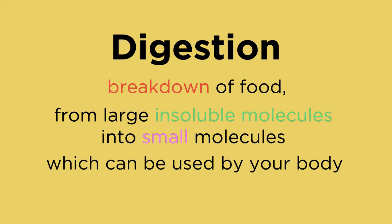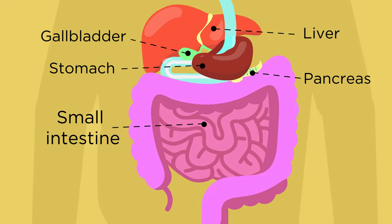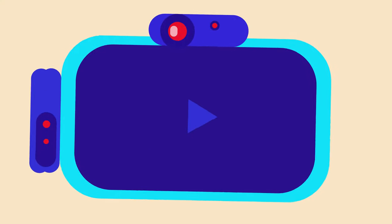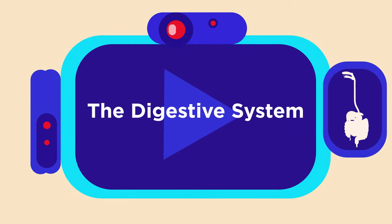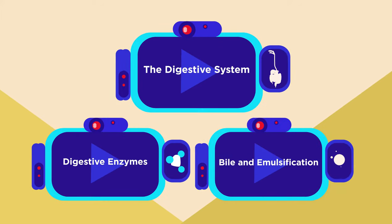For more information on the roles of these organs in the digestive system, watch this video. Enzymes and other chemicals such as bile break down food. For more on the role of enzymes and bile in digestion, watch these videos.